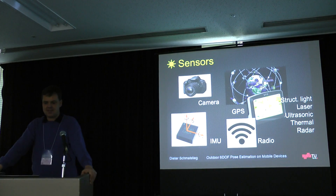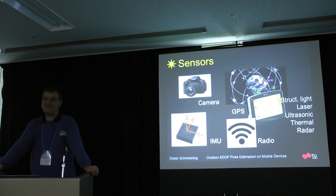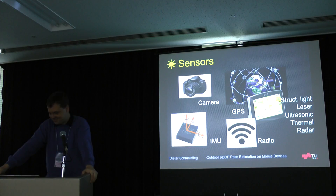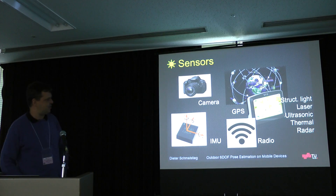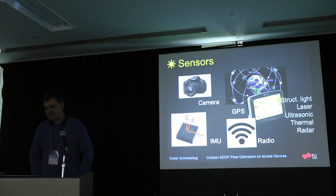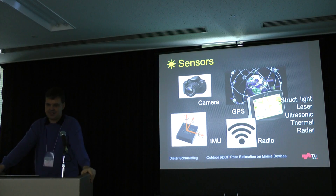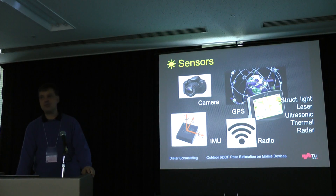There is a big variety of sensors out there, especially cameras. Digital cameras have become extremely ubiquitous. Who still recalls when attaching the first webcam to your computer was a great thing to have? Other sensors include inertial measurement units, GPS, all kinds of radio receivers, and more specialized sensors like structured light sensors, laser range finders, ultrasonic sensors, potentially thermal, radar, and so on. All of these we can use for tracking.